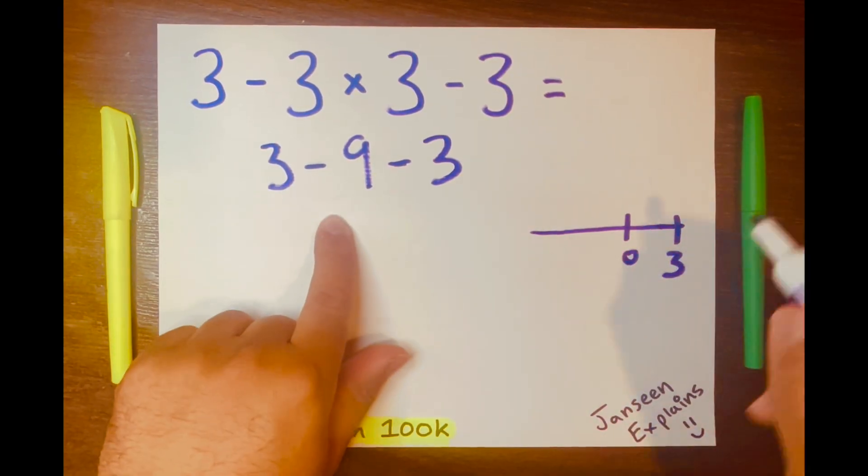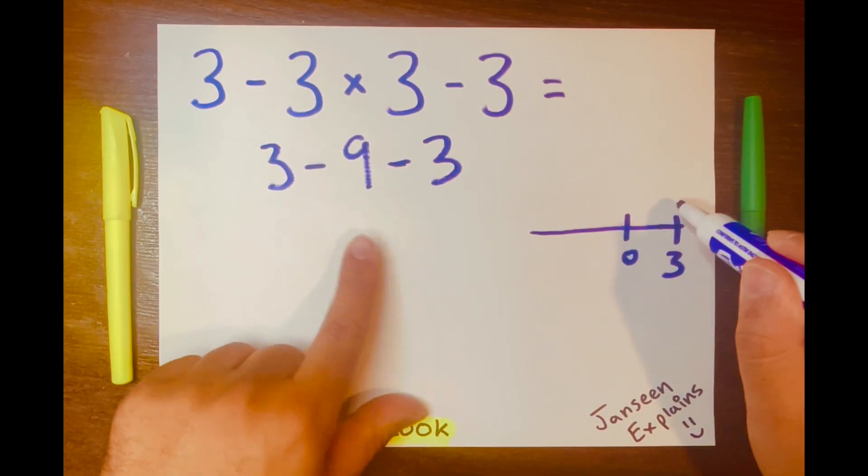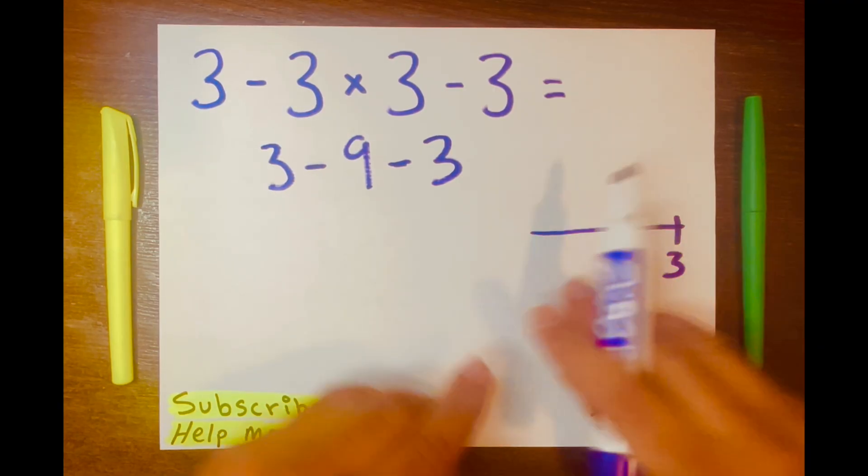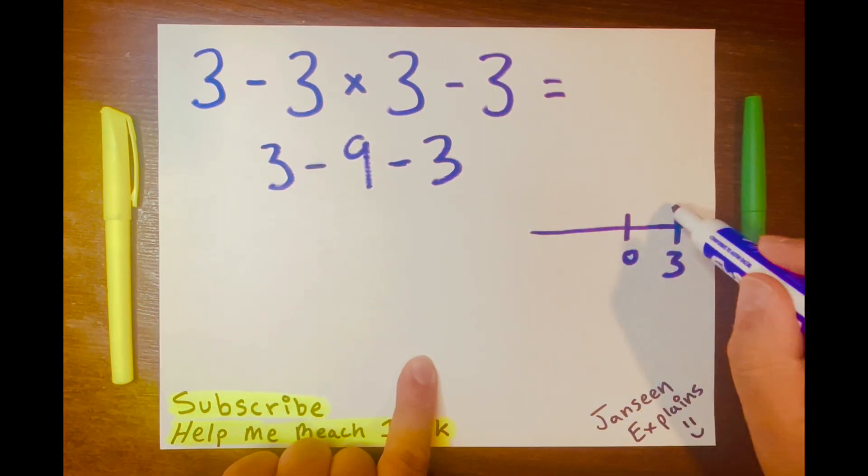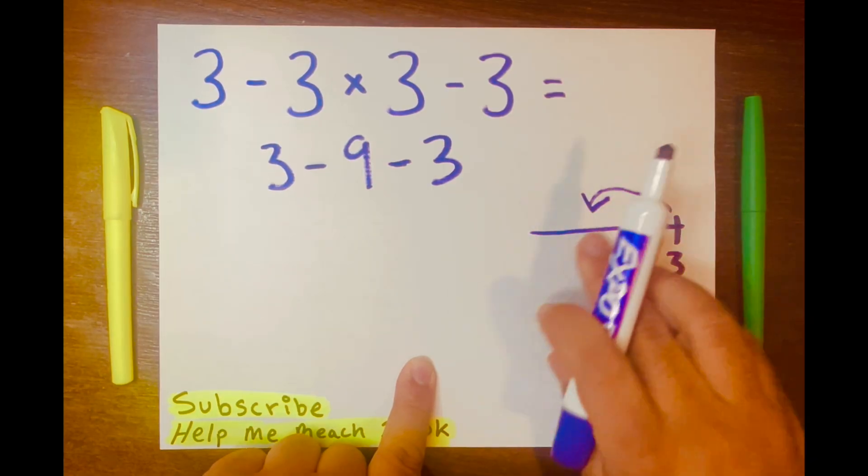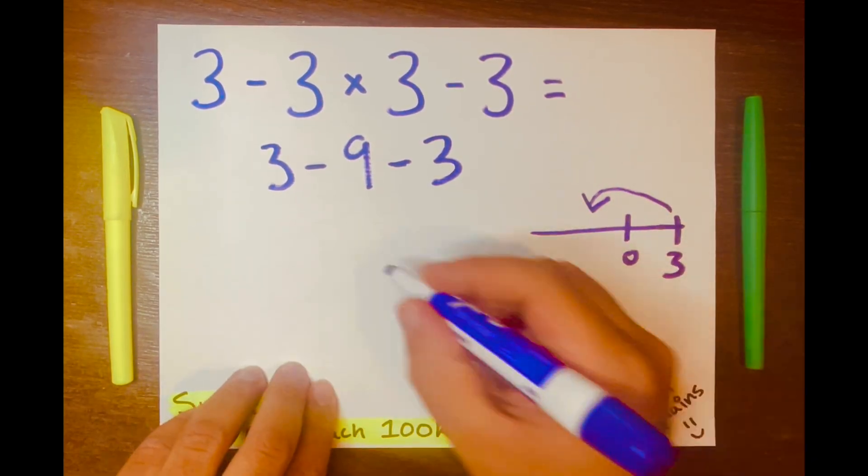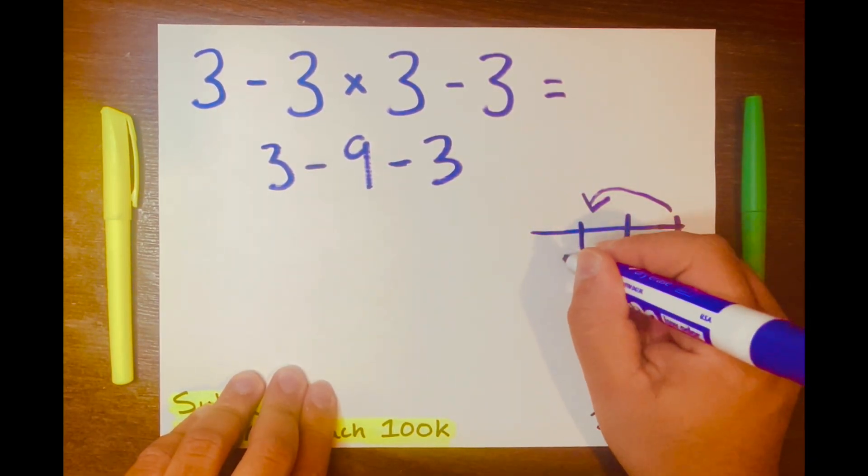So if you go back 9 spaces to the left, right, because we're subtracting, you will eventually land on 6, negative 6, negative 6.